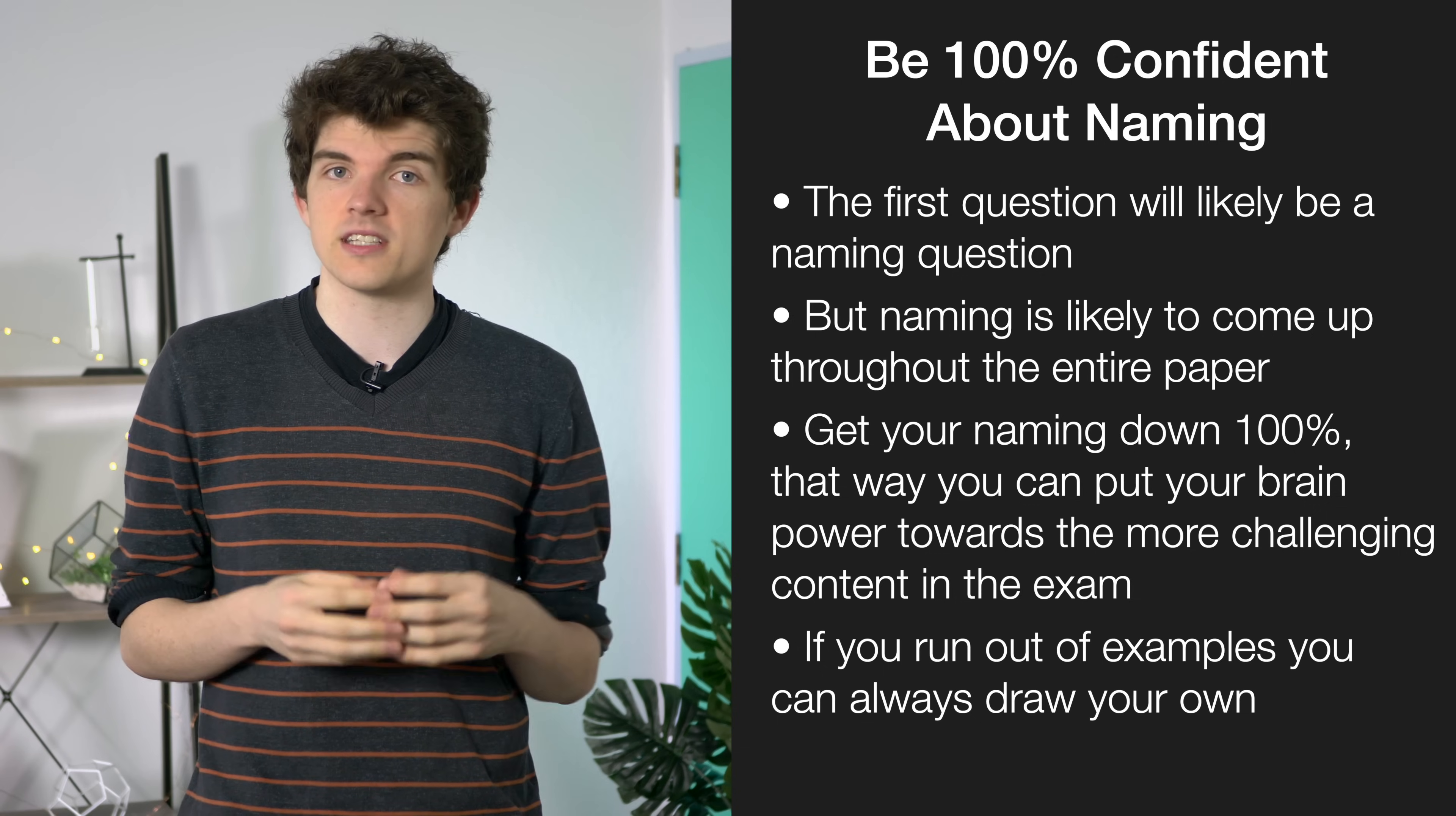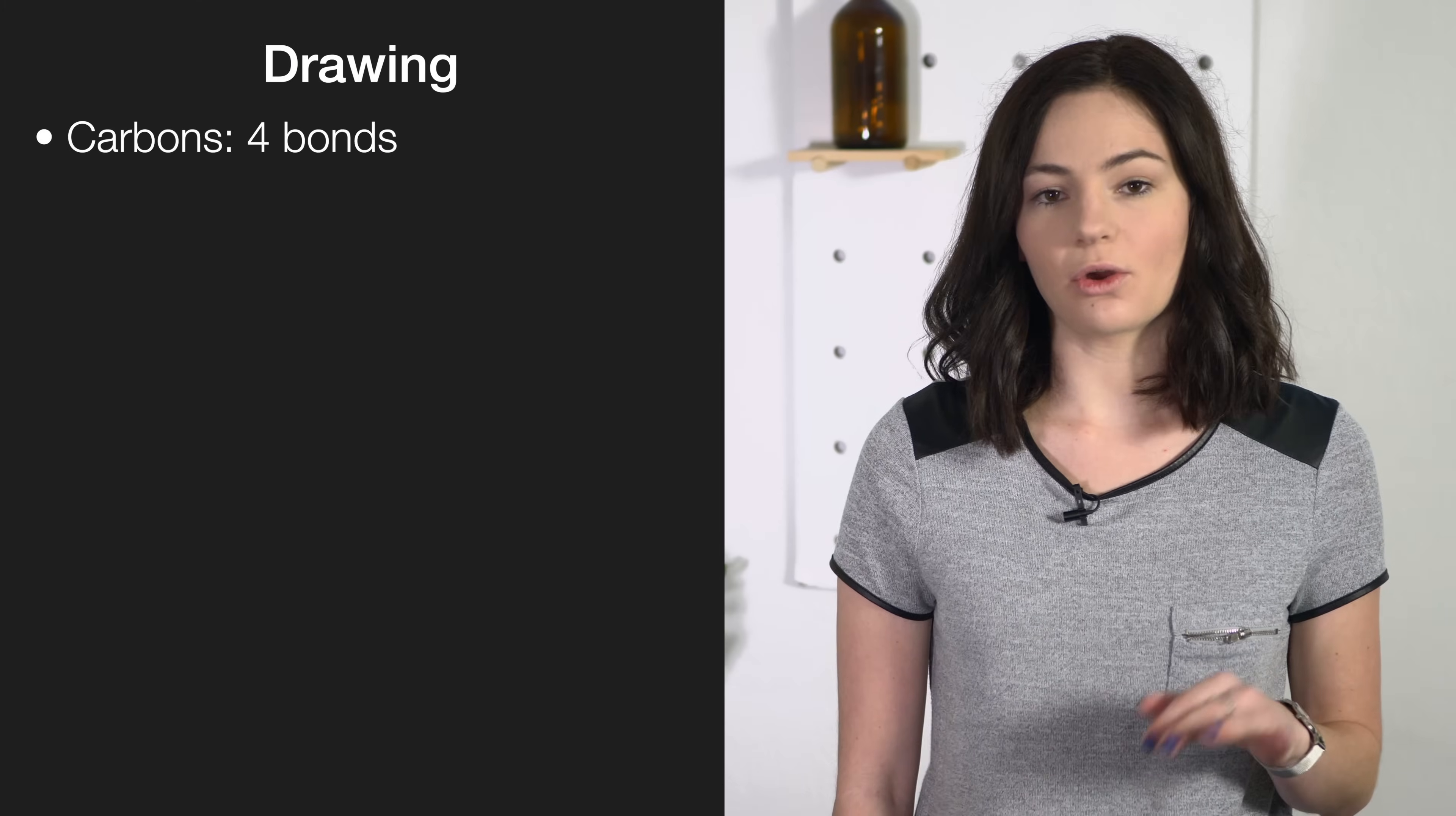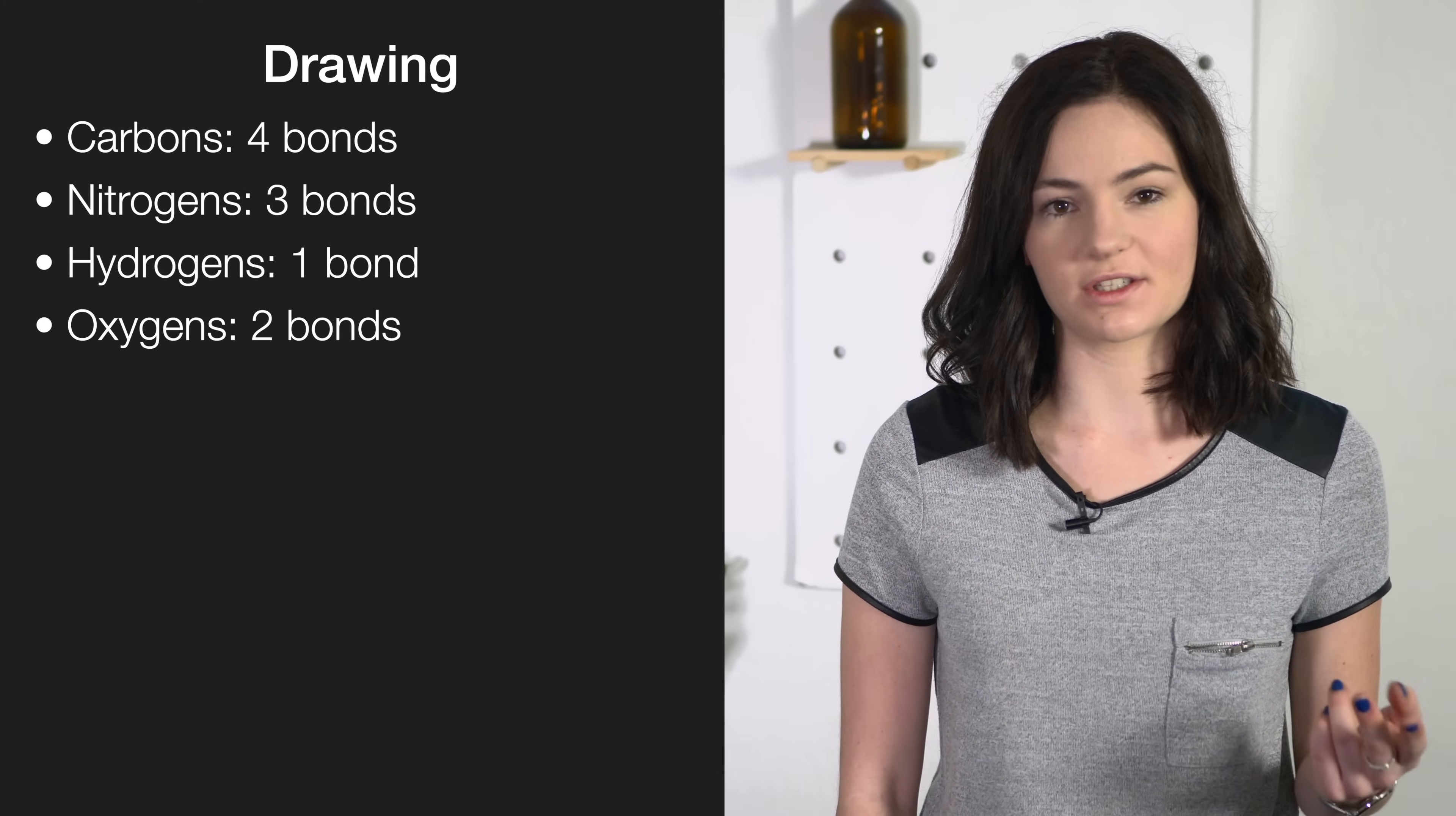Don't forget, if you run out of examples from your workbook, you can always draw your own molecules. When drawing out molecules, it's useful to think about how many bonds each element is going to form. Carbon's going to form four, no more, no less. Nitrogen's going to form three. Hydrogen's going to form one and oxygens are going to have two.